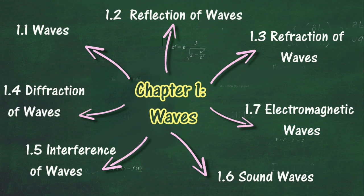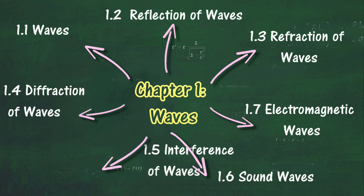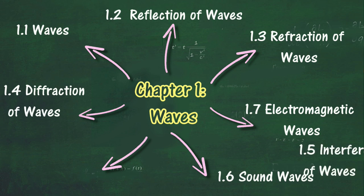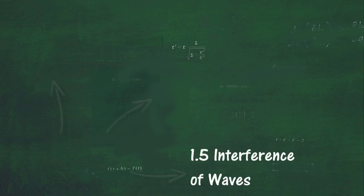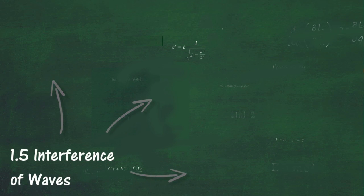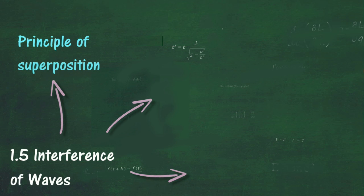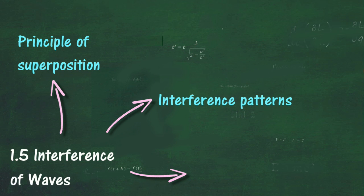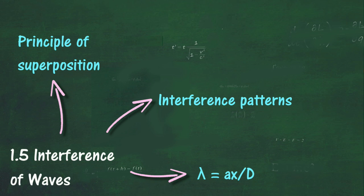In Section 1.5, we will learn about interference of waves. At the end of this section, you should be able to state the principle of superposition, explain the interference of waves, draw and interpret interference patterns, and solve problems involving lambda = ax/d.